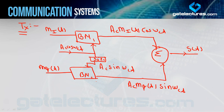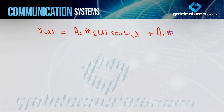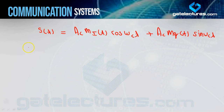Basically yahan par aap DSB-SC ka hi use kar rahe hain, kyunki ultimately aap message into carrier hi kar rahe hain. But aap do different messages ko parallelly transmit kar rahe hain by using quadrature carrier — yahi hoti hai quadrature carrier multiplexing. Ab agar main iska receiver side wala portion dekhun, to hamara jo transmitted signal hai: s(t) = AC·m_i(t)·cos(ωct) + AC·m_q(t)·sin(ωct).